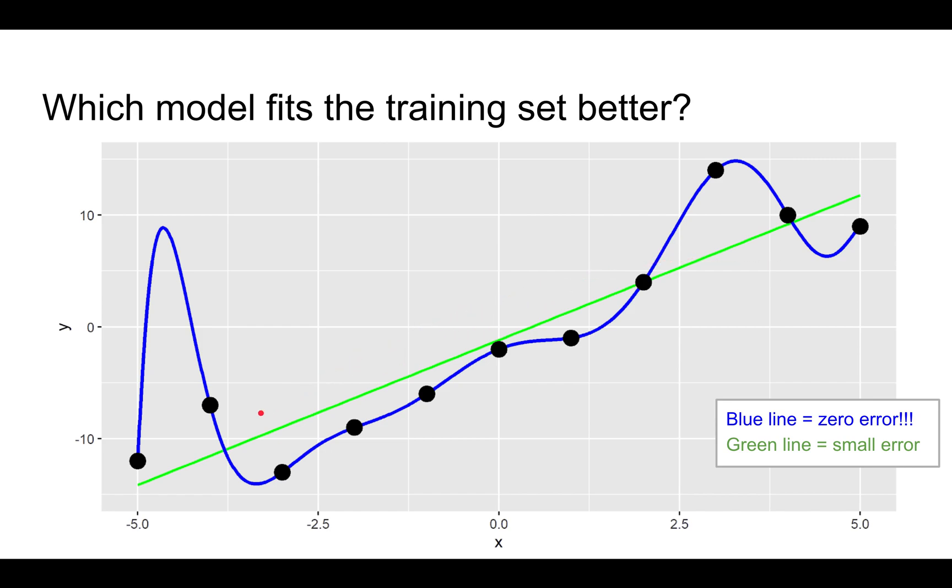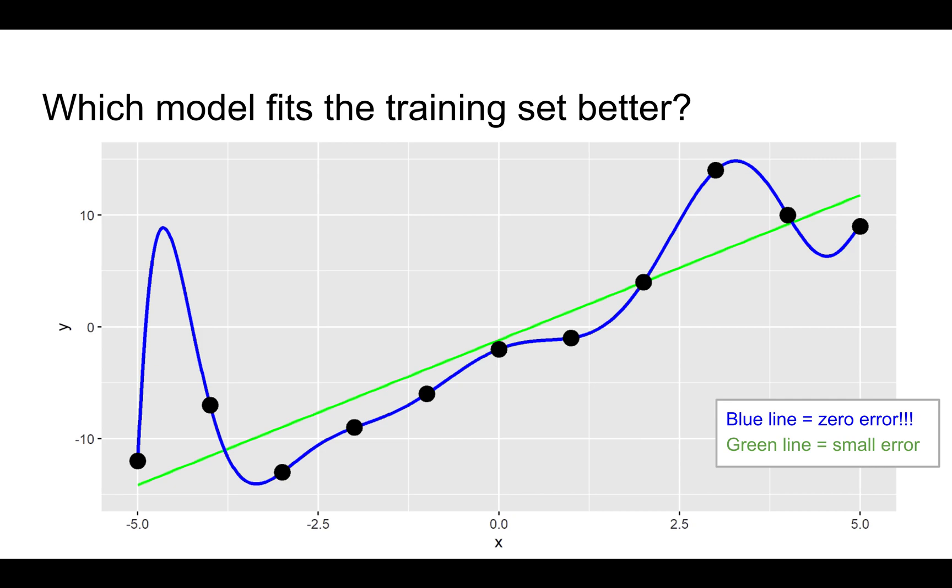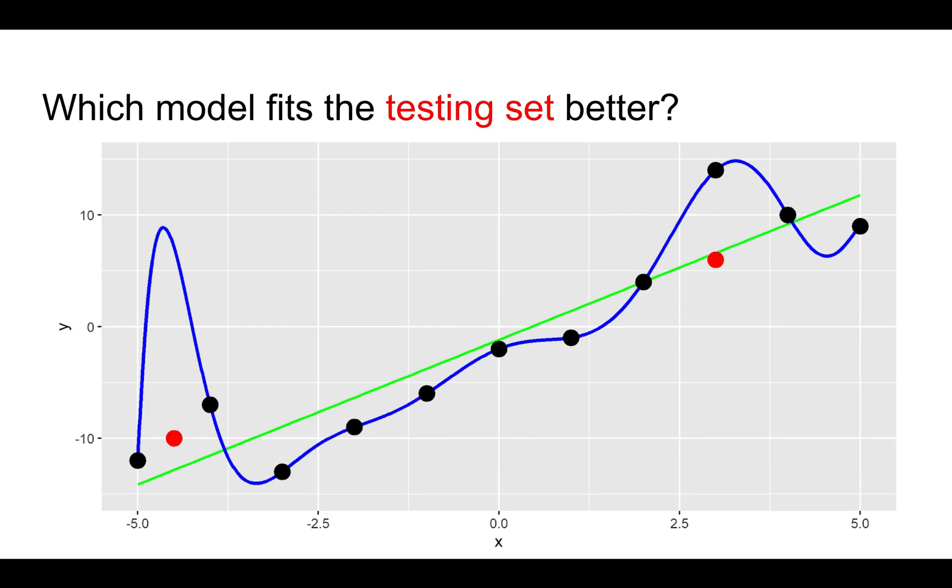So just looking at this, it's quite obvious that we expect the green line to be better, because it fits only the general pattern, whereas the blue line fits the idiosyncratic noisy features. And if you actually look at the testing set, you can see that the green line fits the testing set much better than the blue line. So the blue line fits the training set better, but that's not really useful, because the goal is to fit the testing set better.